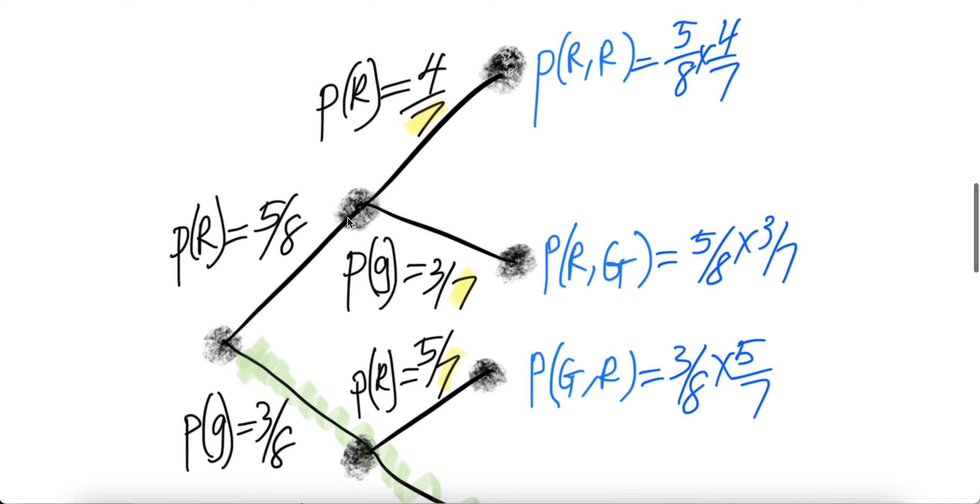Now, if you pick another ball, it can be red again or green. Now the probability of this here, how many red left? One red is taken out already. So you have four red left and then the total now is no more eight because we are not supposed to put that chosen red ball back. So it's four over seven.